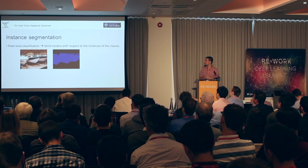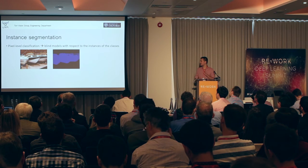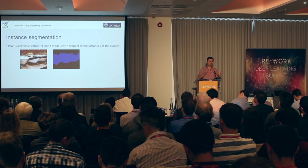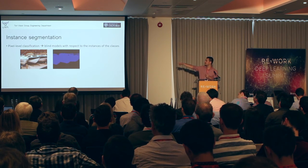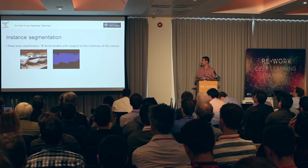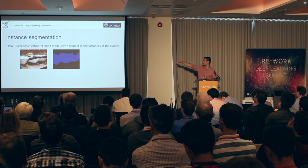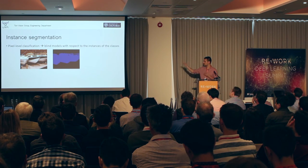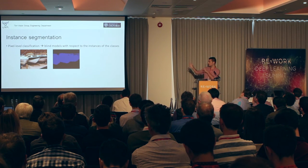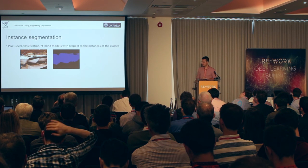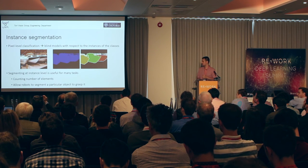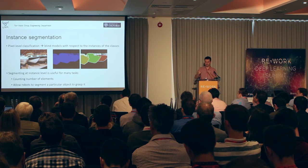I would like to end by talking briefly about instance segmentation. One issue I have omitted is that pixel-level classification doesn't allow us to distinguish between different instances. For example, in an image of a set of boats, a good segmentation model can get a solution where blue represents a boat — so it's correct. However, we cannot distinguish how many boats we have or whether different pixels belong to different boats. Because of that, we would like to get instance-level segmentation, which is useful for counting the number of elements and treating each instance separately.